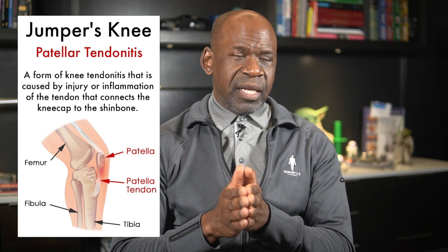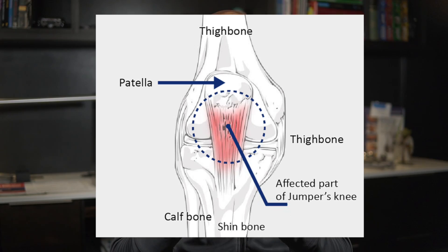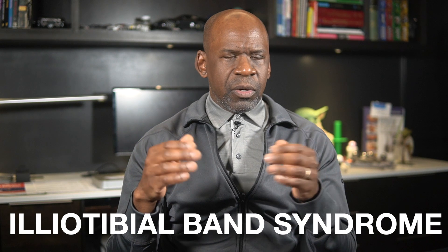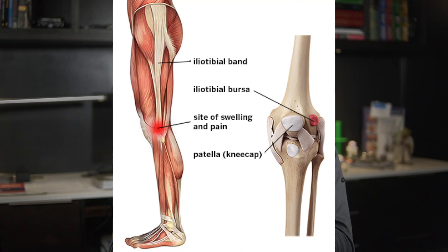Now let's move on to overuse injuries. Patellar tendinopathy, or jumper's knee, is caused by repetitive activities that include jumping or running, leading to overloading of the patellar tendon, resulting in tendinopathy and localized pain at the inferior pole of the patella, or the bottom of the kneecap. Iliotibial band syndrome (ITBS) is characterized by inflammation and friction of the iliotibial band as it rubs against the lateral femoral condyle during repetitive knee flexion and extension.